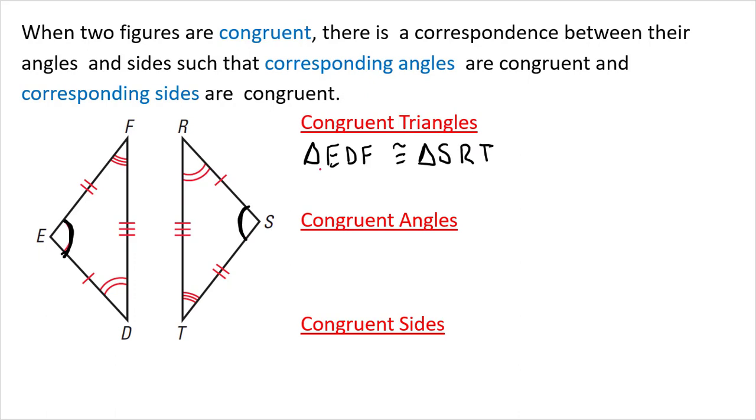Right away I can tell E is congruent to S. I can tell angle D is congruent to angle R, and angle F is congruent to angle T. Our congruent angles are: angle E is congruent to angle S, angle D is congruent to angle R, and angle F is congruent to angle T.